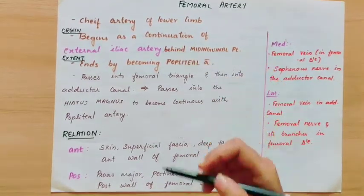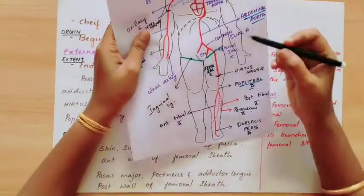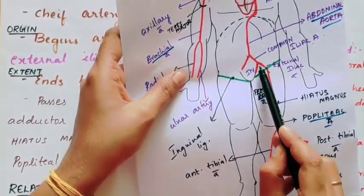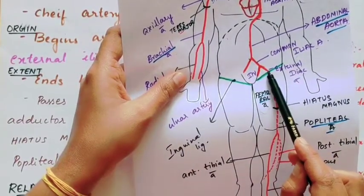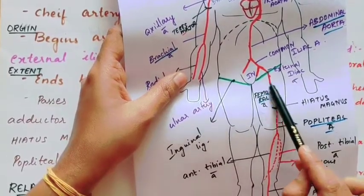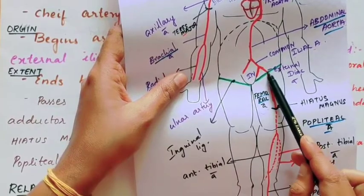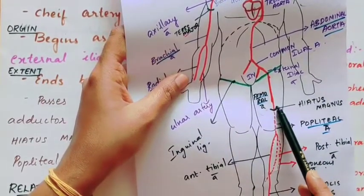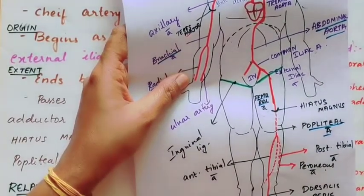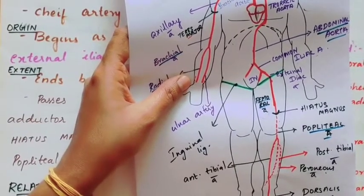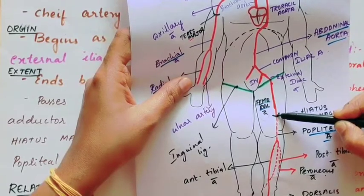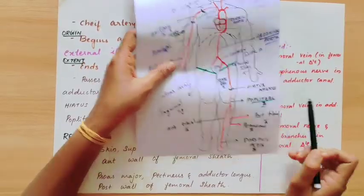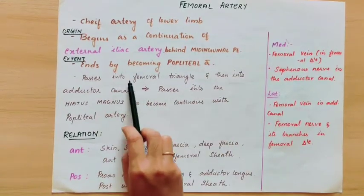The femoral artery begins as a continuation of the external iliac artery. The common iliac artery divides into internal and external iliac arteries, and the external iliac artery becomes the femoral artery at the mid-inguinal point. It ends at the hiatus magnus, which is a gap in the adductor magnus muscle, where it passes into the posterior compartment and becomes the popliteal artery.